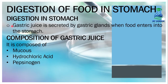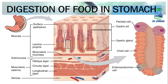The first step of digestion in the stomach is that gastric juice is secreted from the gastric glands when food enters the stomach. There are glands called gastric glands, and their function is to secrete the gastric juice.